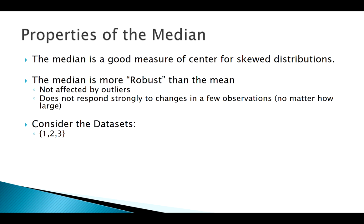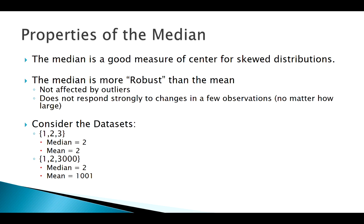Let's demonstrate this. Take the simple data set: 1, 2, 3. The median is 2 and the mean is also 2. Now change just one number: 1, 2, and 3,000. The median stays the same — still 2 — but the mean changes significantly. One outlier doesn't affect the median but has a big effect on the mean. The median is more robust and more appropriate for skewed situations.